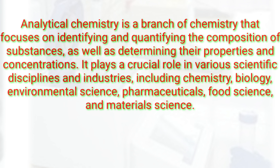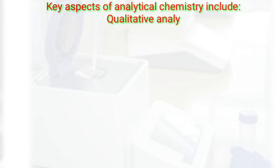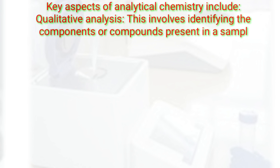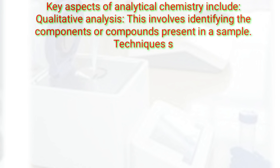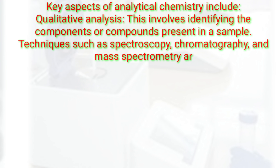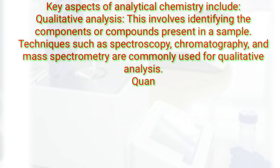Key aspects of analytical chemistry include qualitative analysis, which involves identifying the components or compounds present in a sample. Techniques such as spectroscopy, chromatography, and mass spectrometry are commonly used for qualitative analysis.